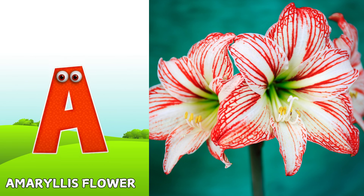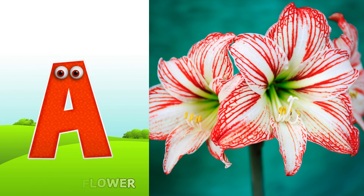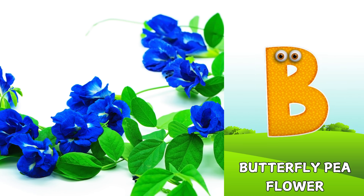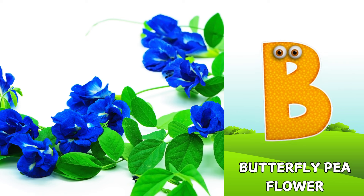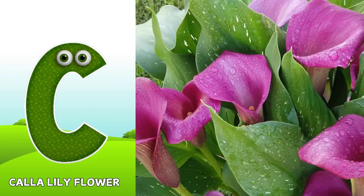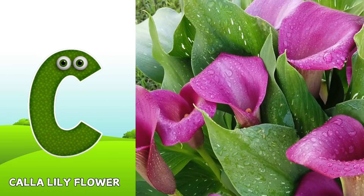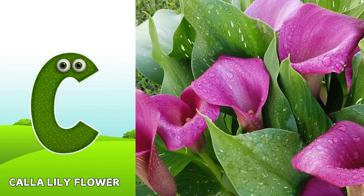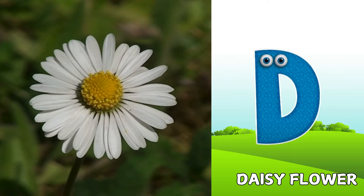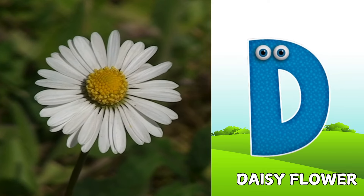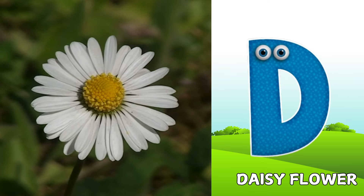A is for Amaryllis flower. A, A, Amaryllis flower. B is for Butterfly Pea flower. B, B, Butterfly Pea flower. C is for Calla Lily flower. C, C, Calla Lily flower. D is for Daisy flower. D, D, Daisy flower.